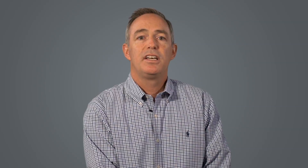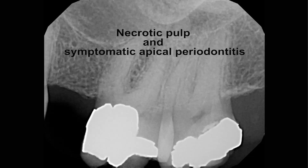There is nothing remarkable about this case. It isn't long or sharply curved, there aren't five or six canals — it is a standard maxillary first molar. The patient presented with a history of pain in the area. Tooth number 14 did not respond to cold testing and was sensitive to percussion. The diagnosis was necrotic pulp and symptomatic apical periodontitis.